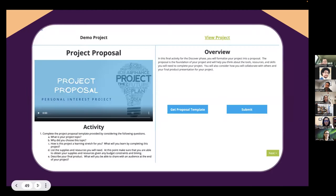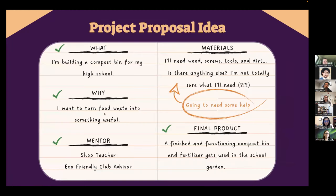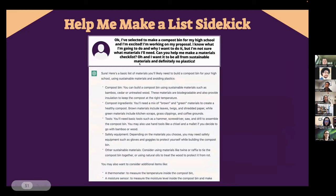Then there's the project proposal — a chunky proposal where kids talk about the what and why of the project. Madeline had most pieces down, but the one thing she wasn't sure about were the materials, since she'd never built one of these things before. So she's able to turn to the chatbot and say: 'I've selected to make a compost bin at my high school. I'm working on my proposal, I know what I'm going to do and why, but I'm stuck on materials. Can you help me make a materials list? And I want everything to be sustainable.' In seconds, ChatGPT provides a response.